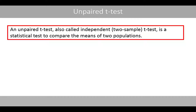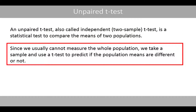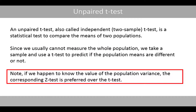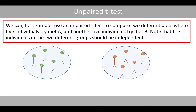An unpaired t-test, also called independent two-sample t-test, is a statistical test to compare the means of two populations. Since we usually cannot measure the whole population, we take a sample and use a t-test to predict if the population means are different or not. If we happen to know the value of the population variance, the corresponding z-test is preferred over the t-test. We can, for example, use an unpaired t-test to compare two different diets where five individuals tried diet A and another five individuals tried diet B.